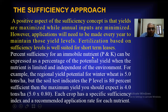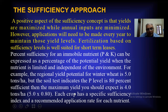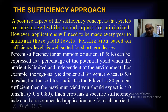Percent sufficiency for immobile nutrients like phosphorus and potassium can be expressed as a percentage of potential yield when the nutrient is limiting and independent of the environment. For example, if the regional yield potential for winter wheat is 5 tons per hectare but the soil test indicates the phosphorus level is 80 percent sufficient, then the maximum yield you should expect is 4 tons per hectare — that is 5 tons multiplied by 80 percent. Each crop has a specific sufficiency index and recommended application rate for each nutrient.